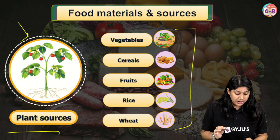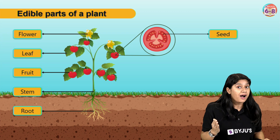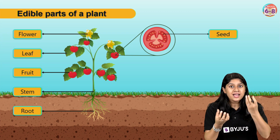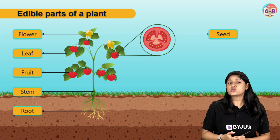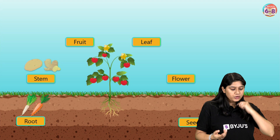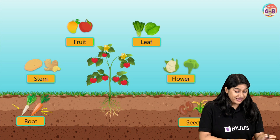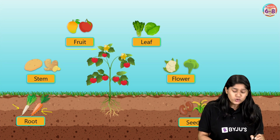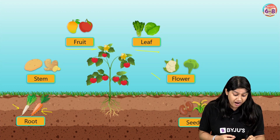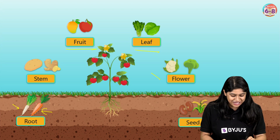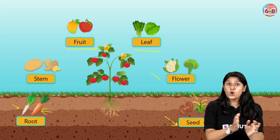When we talk about a plant, it has different parts and each of these parts in some plants is the edible part that we can eat. Which part gives us what? We have root — radish and carrot. Then we have stem — potato and ginger. Fruit — mango and apple. Leaves — spinach and cabbage. Flower — cauliflower and broccoli. And then we have seed — kidney beans, wheat, rice, etc.